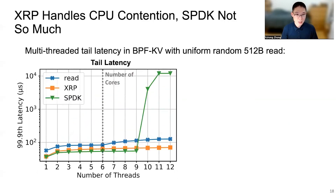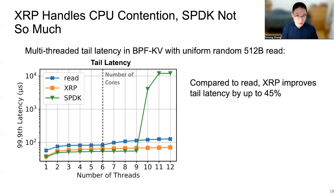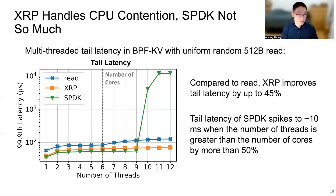We also measure tail latency in the multi-threaded experiment. The x-axis is the number of threads and the y-axis is the 99.9th percentile tail latency. Similar to the throughput result, compared to using read-syscall, XRP improves the tail latency of BPFKV by up to 45%. We also see that SPDK's tail latency spiked to around 10 milliseconds when the number of threads exceeded the number of cores by more than 50%.